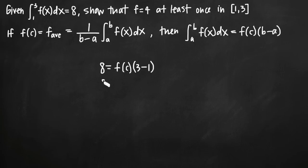What we get is 8 equal to 2 times f of c, since 3 minus 1 is just 2. We divide both sides by 2, and we get 4 equals f of c.